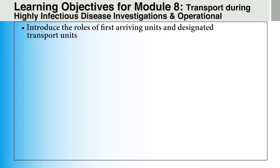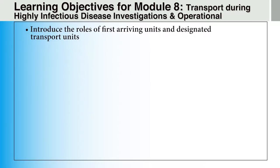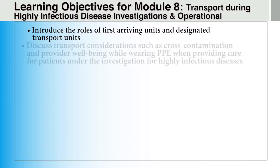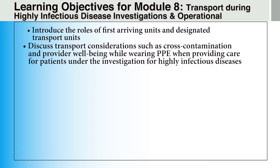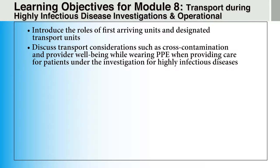In this module, we will introduce the roles for first arriving units and designated transport units. We will discuss transport considerations such as cross-contamination and provider well-being while wearing PPE when providing care for patients under investigation for Ebola virus disease or other highly infectious diseases such as avian influenza or H5N1, smallpox, multidrug-resistant TB, SARS, and MERS.